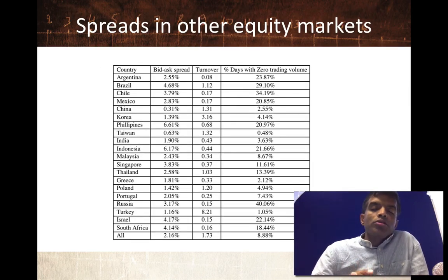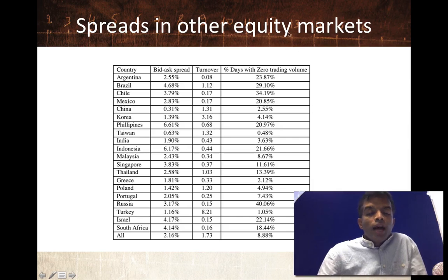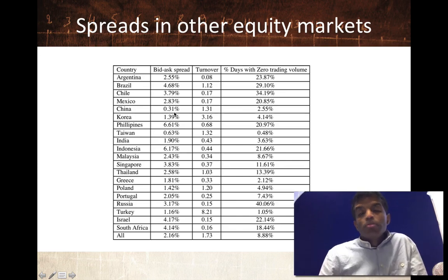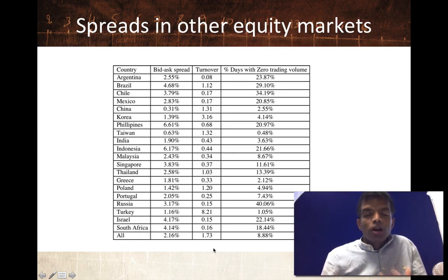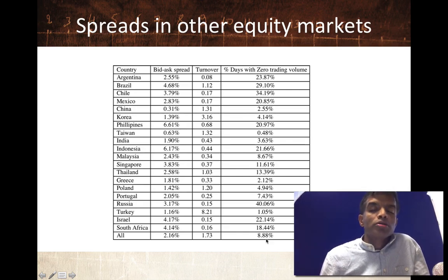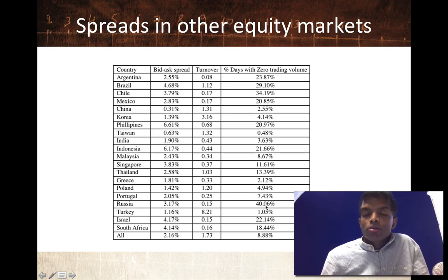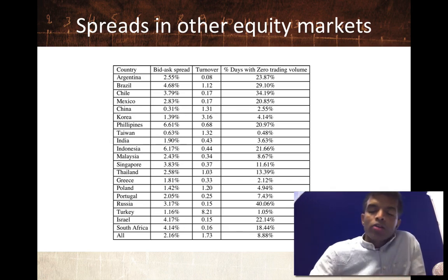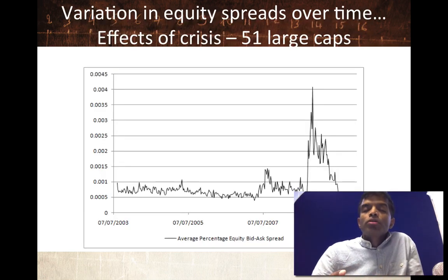If you look across markets, you'll start to see how much liquidity varies. In China, the spread is only 0.31%, whereas in the Philippines it's 6.61%. That's partly explained by turnover — how much trading you see in these markets — and partly by the number of days where you see zero trading volume on a stock. In Russia, for example, 40% of days see zero trading volume, which tells you that spreads are going to reflect that lack of liquidity. So bid-ask spreads vary across stocks, across market cap classes, across markets, and across time.